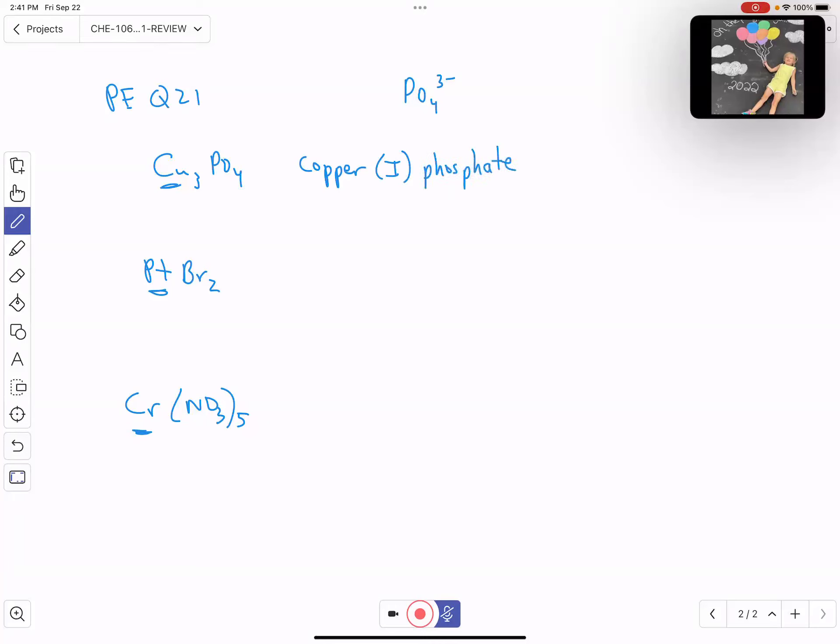The one indicates I've got three coppers at plus one each to balance out the phosphate at minus three. That Roman numeral indicates the charge on the copper, nothing more than that.